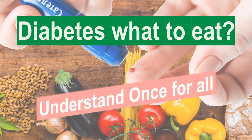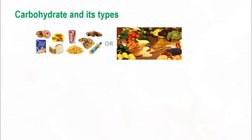Let's get started. To understand things discussed in this video, we strongly suggest you first look at our video on nutrition basics — the link is provided in the description. Carbohydrate, protein and fats are the macronutrients in our diet. We will discuss each one by one in regard to diabetes. Let's start with carbohydrate.